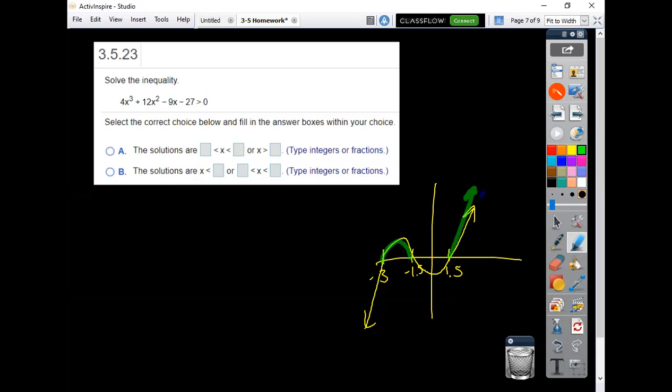So how would that look in interval notation? From negative 3 to negative 1.5 and... oh, they're writing it in inequality form. So we've got those two places. I would say on the further left it's between the negative 3 and the negative 1.5, and then it's greater than the positive 1.5.